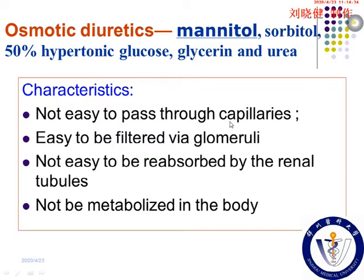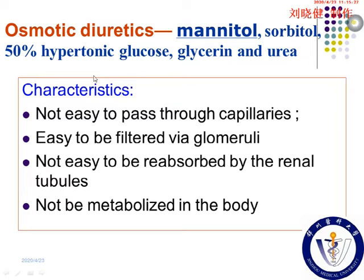These drugs must be easily filtered at the glomeruli so they can be excreted with urine, but not easily reabsorbed by the renal tubules, and not metabolized in the body — otherwise they would lose their effect of changing osmotic pressure. Hypertonic glucose can be used by the body as energy, so it has a relatively weaker osmotic diuretic effect than mannitol.